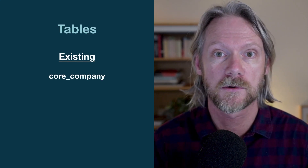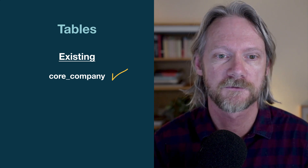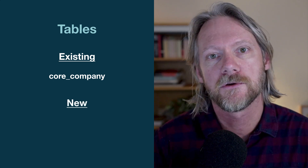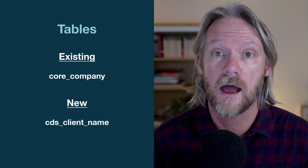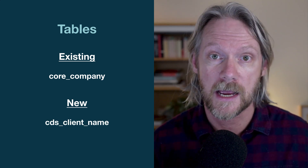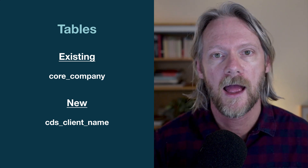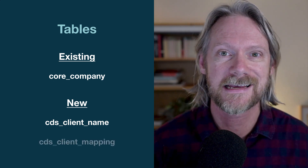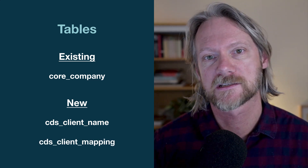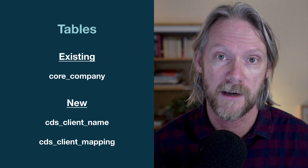So how do we actually normalize company names? We retain the core company table as our gold standard — our source of truth. We then add two new tables: the CDS Client Name, which is the normalized company name maintained by ServiceNow, and the CDS Client Mapping, which contains all the variations or variants of that normalized company name.